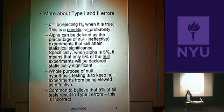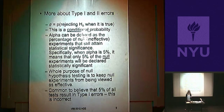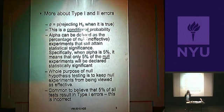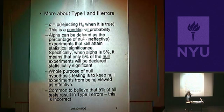Think of it this way: if all 100 experiments are ineffective, the highest number of Type 1 errors would be 5 — only 5 will get through. If all 100 experiments are effective — that is, the null hypothesis is false — then how many Type 1 errors can you make? Zero. In any given group of tests, we don't know how many are ineffective and how many are effective, so you can't tell.